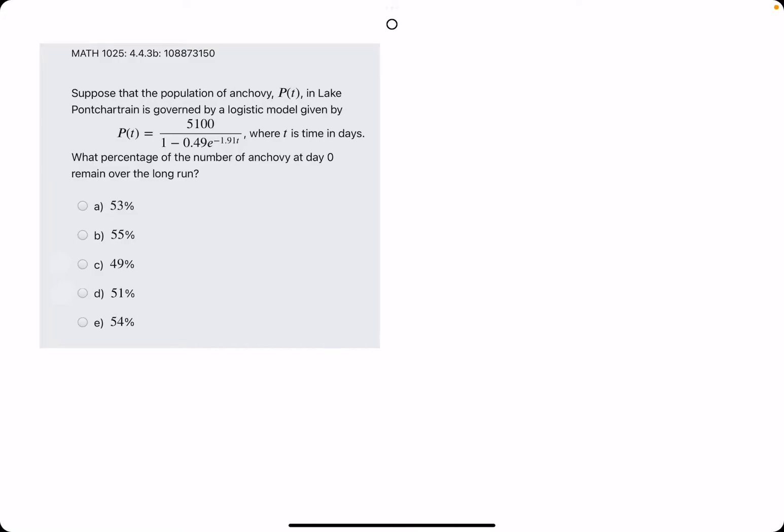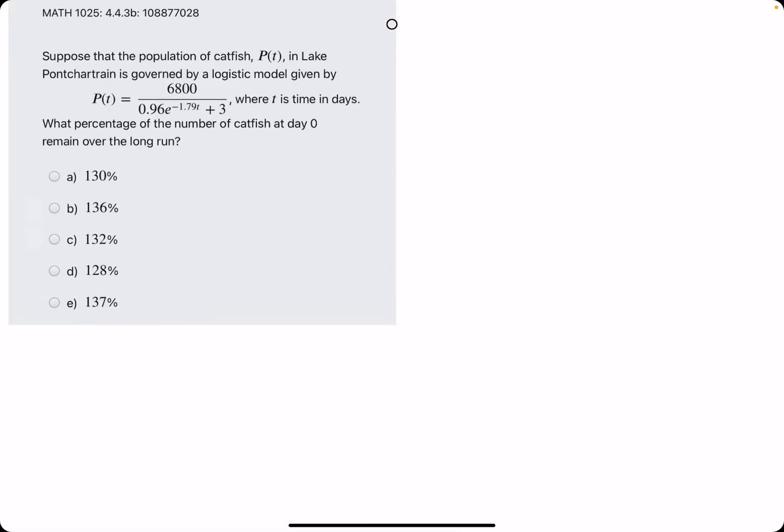Okie dokie. In this problem, they give us a function representing the population of anchovy. And in general, it's always just like population of different fish.